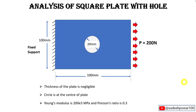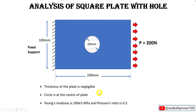In this video we are going to talk about analysis of a square plate with a hole. There is one fixed support and one force applied on a square plate with dimensions 100 mm by 100 mm. One circular hole is at the center with diameter 20 mm and a force of 200 newtons is applied at one end. The thickness of the plate is negligible, Young's modulus is 200×10³ MPa, and Poisson's ratio is 0.3. We will solve this problem using both analysis software and an analytical method.